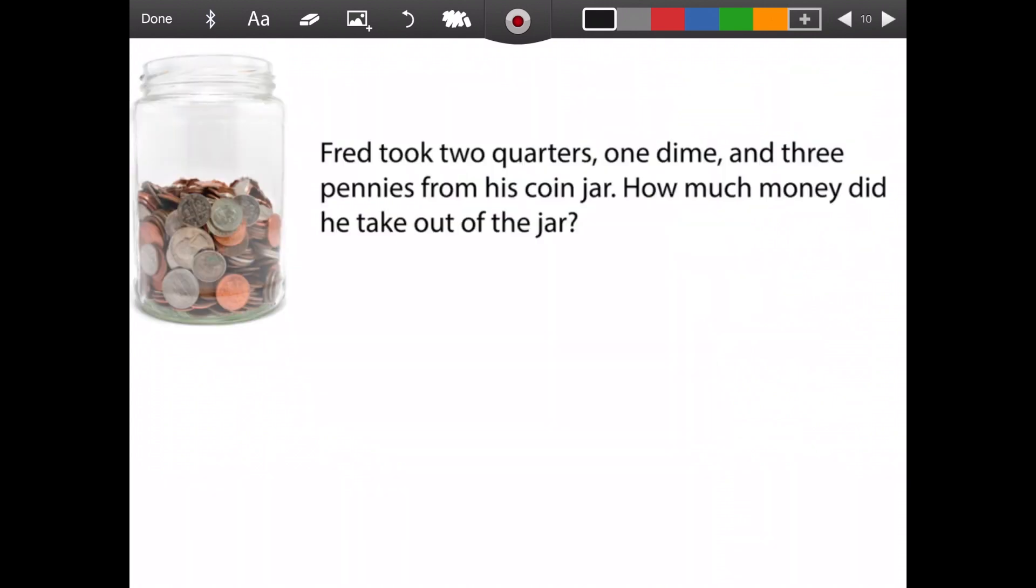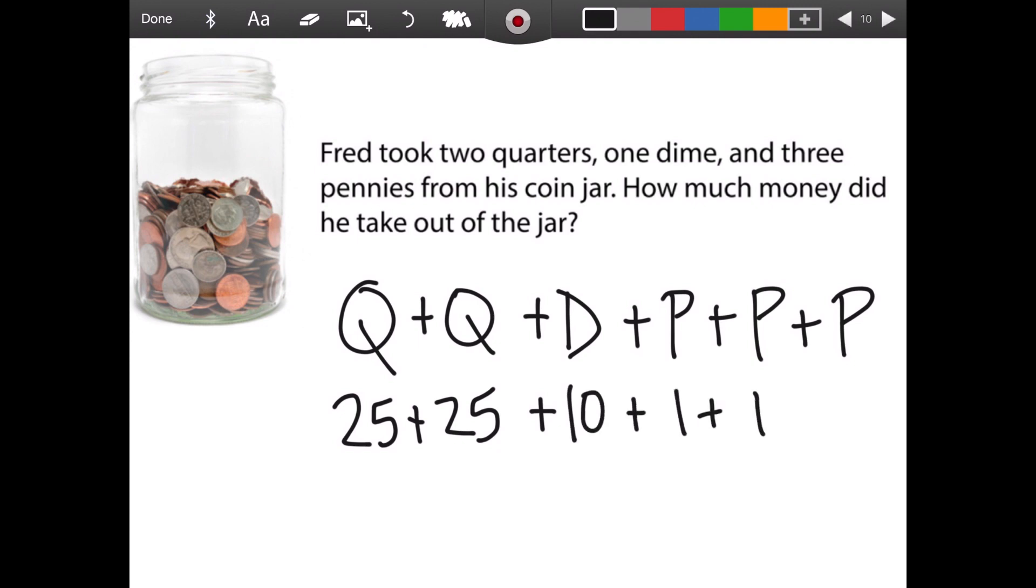So Fred took two quarters, one dime, and three pennies from his coin jar. How much money did he take out of the jar? We have two quarters, a quarter and a quarter, one dime, and three pennies. We want to know how much money he took out of the jar. So remember a quarter is worth 25 cents, and 25 cents. A dime is 10 cents, and then a penny, a penny, and a penny, each being one cent. So if I start adding these up together, 25 plus 25 is 50, plus 10 is 60, and plus one, 61, 62, 63. 63 cents. So again, Fred took two quarters, one dime, and three pennies from his coin jar. How much money did he take out of the jar? He took out 63 cents.